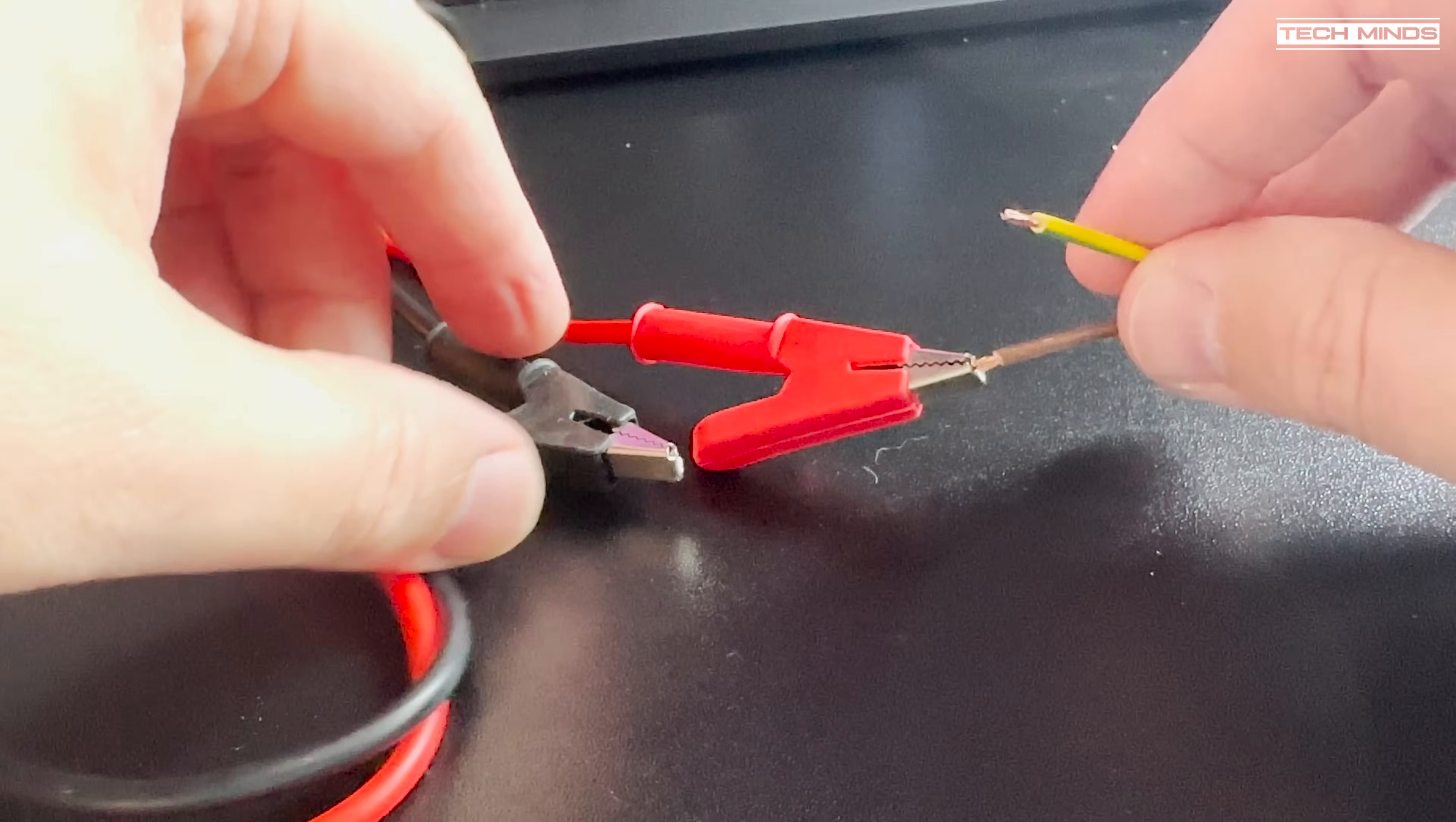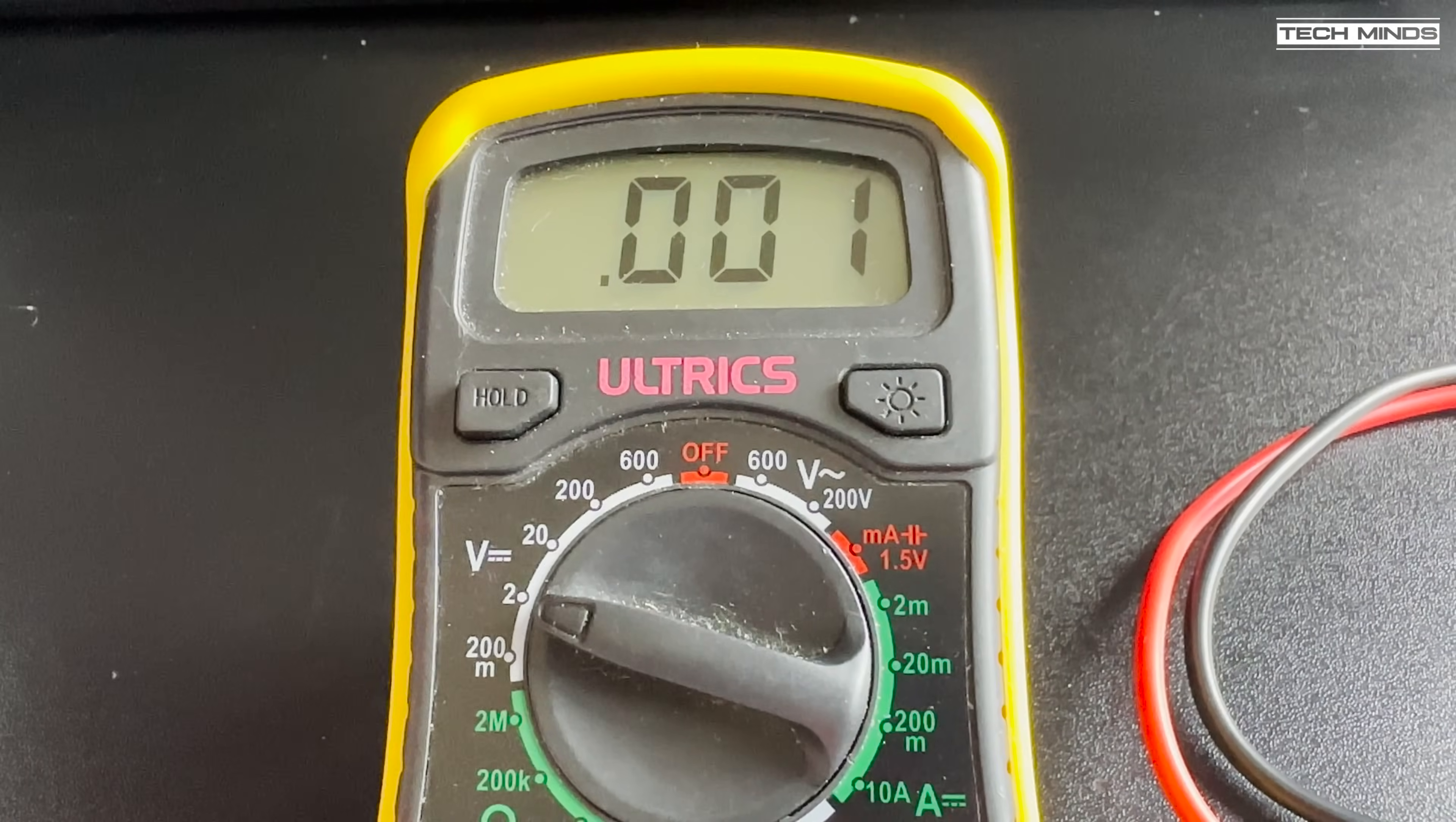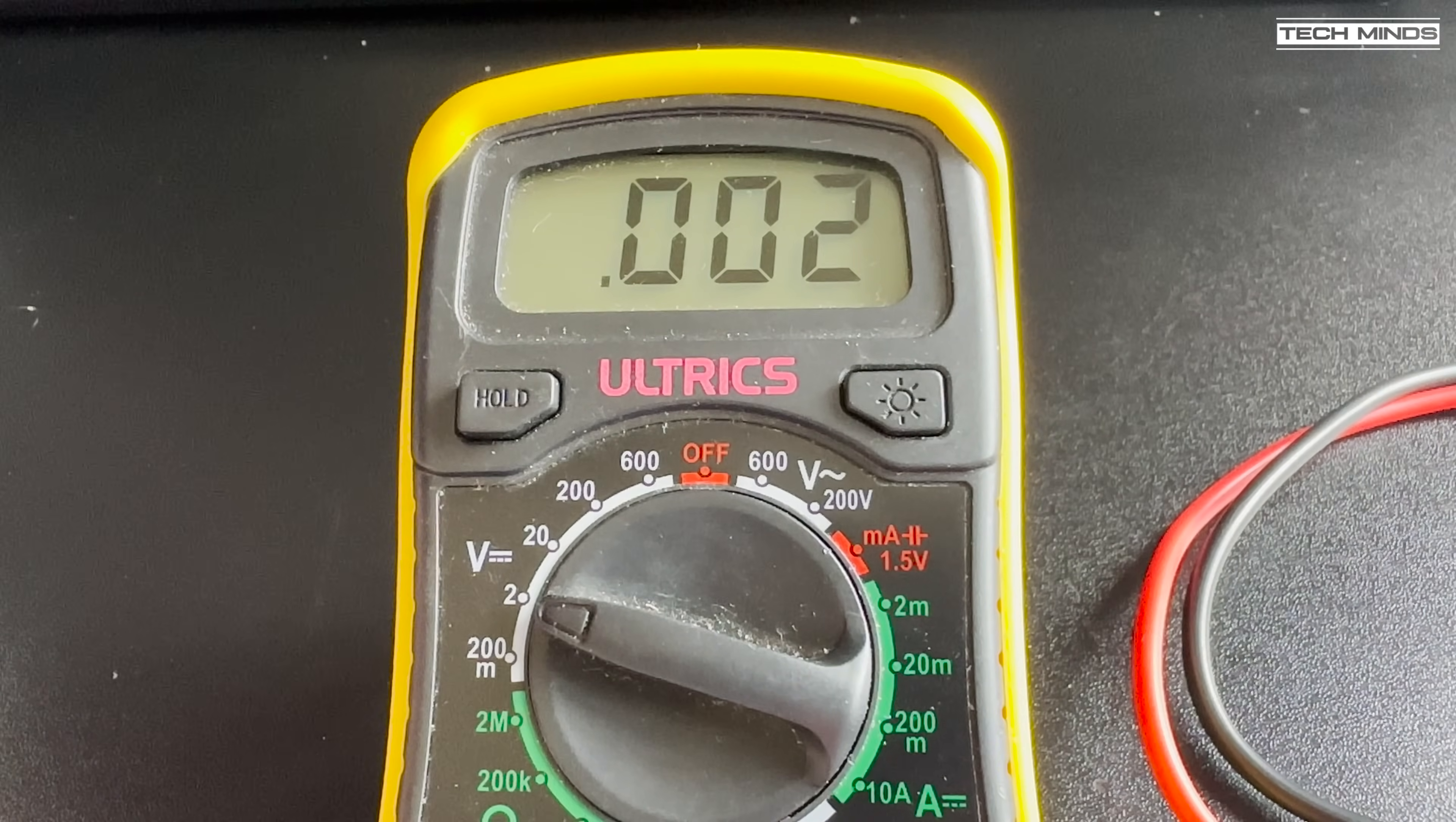Now this isn't the most expensive multimeter in the world, but it's fairly accurate and can measure down to millivolts as needed. Using SDR Console to control the E200, I transmitted a narrow FM carrier at full power. The resulting voltage as shown on the meter was 522 millivolts.